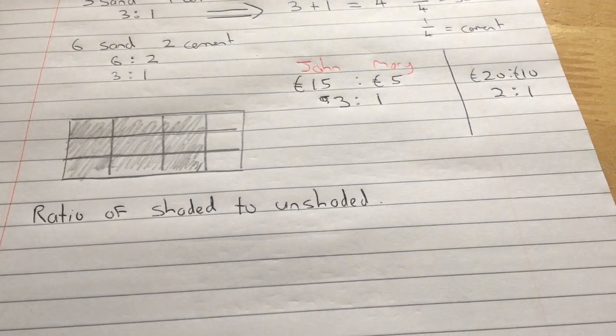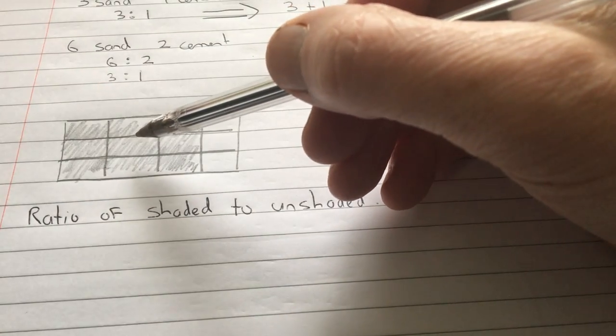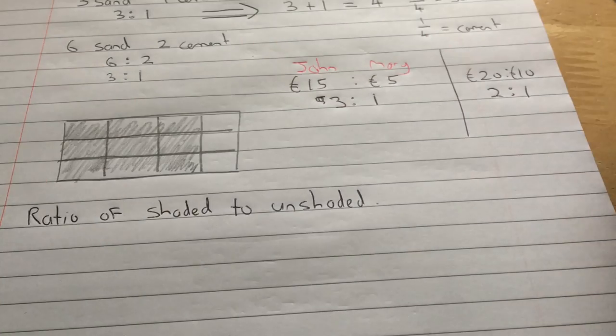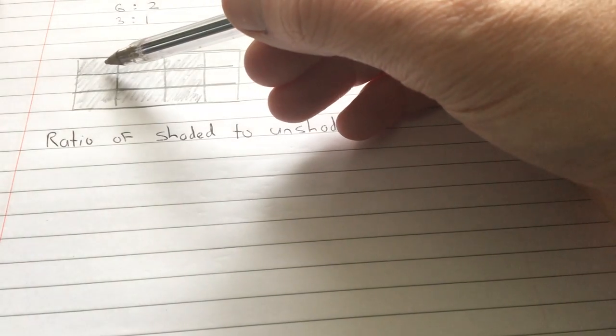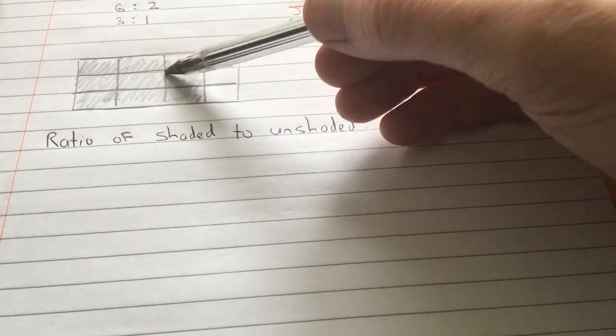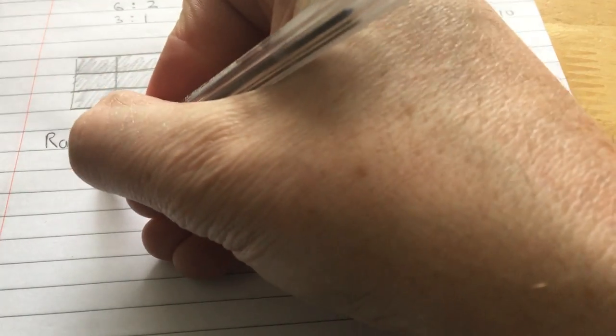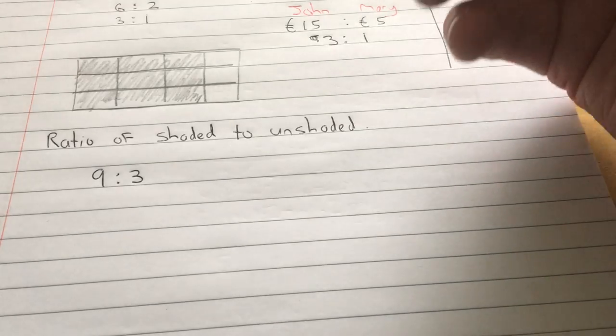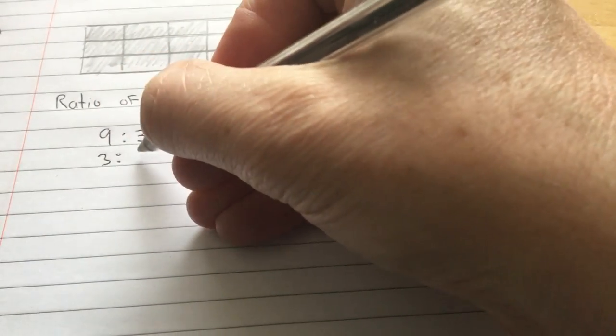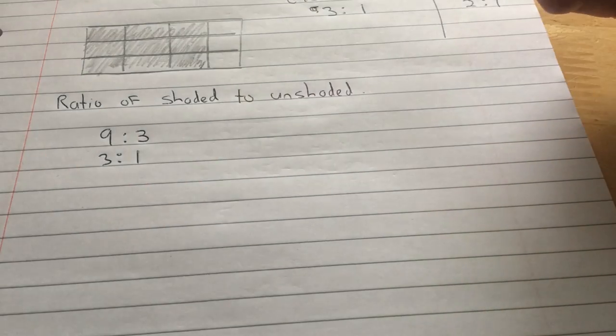Now, what is the ratio of shaded to unshaded? First of all, how many squares have we got shaded? There are nine shaded and there are three that are unshaded. So nine is to three. We tend to write them in their simplest form. So find a common denominator. Three goes into that three times and three goes into that once. So there are three times as many shaded sectors as there are unshaded sectors.